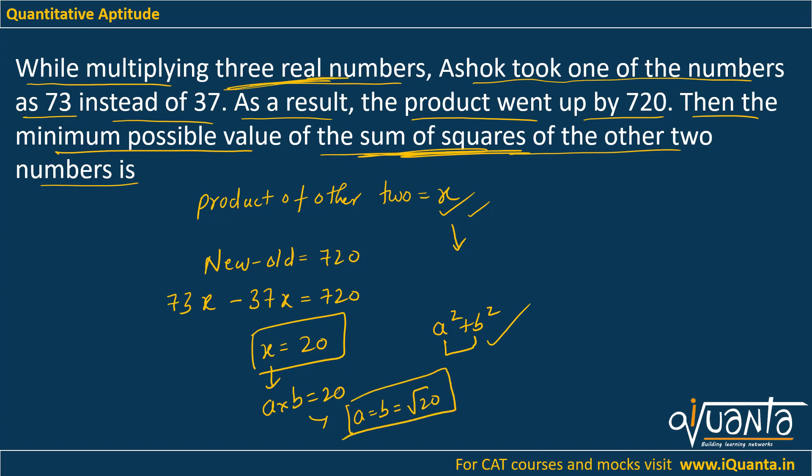Yes, we were given that three real numbers were being multiplied, so yes, √20 is a real number. So if a equals b, then sum of squares will become 2a², which will give us 2 into (√20)² is 20. This will become 40. So 40 will be the correct answer to this question.